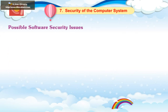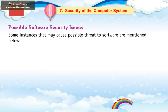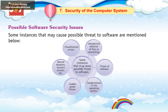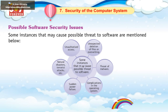Possible Software Security Issues: Some instances that may cause possible threat to software are: unauthorized access, unexpected deletion of files or overwriting, threat of malware, complications in the operating system, sudden power failure, natural disasters, and terrorist attacks.